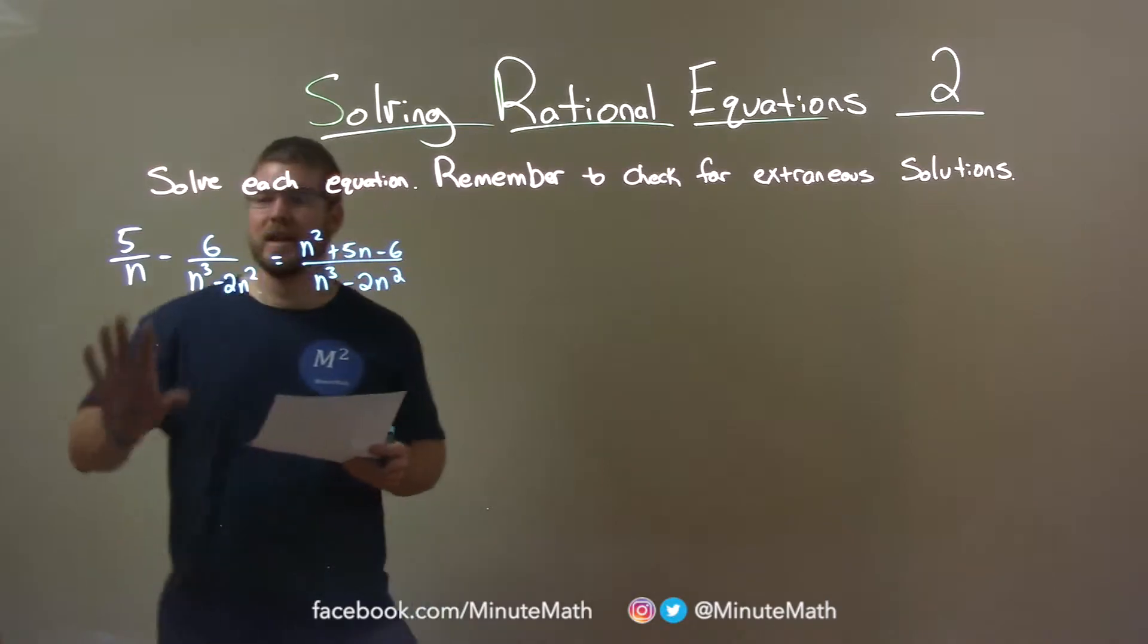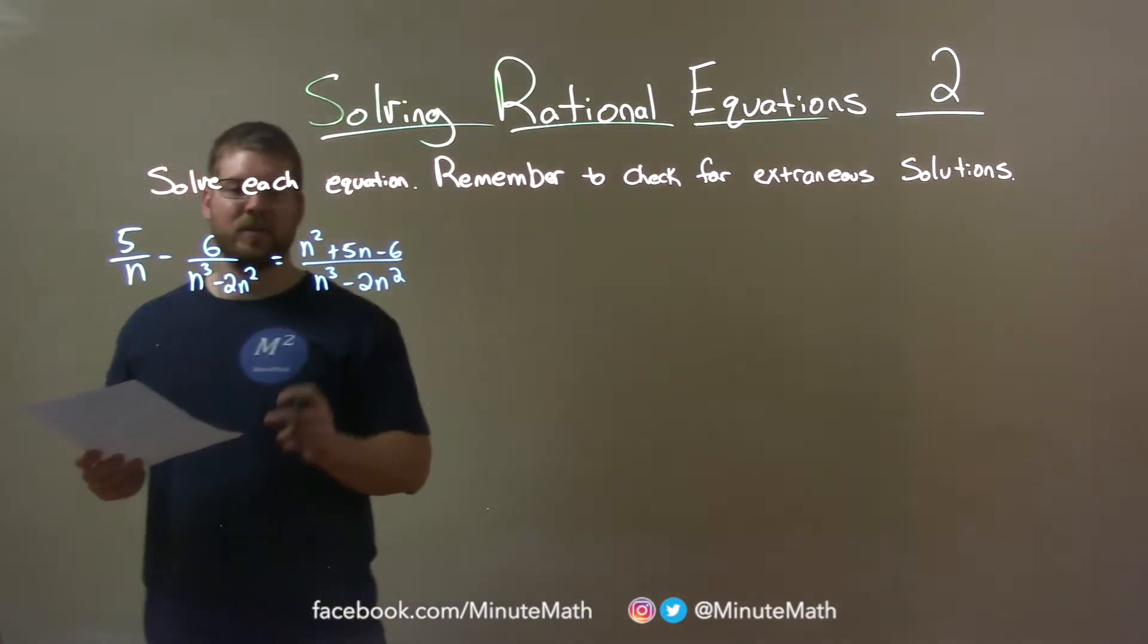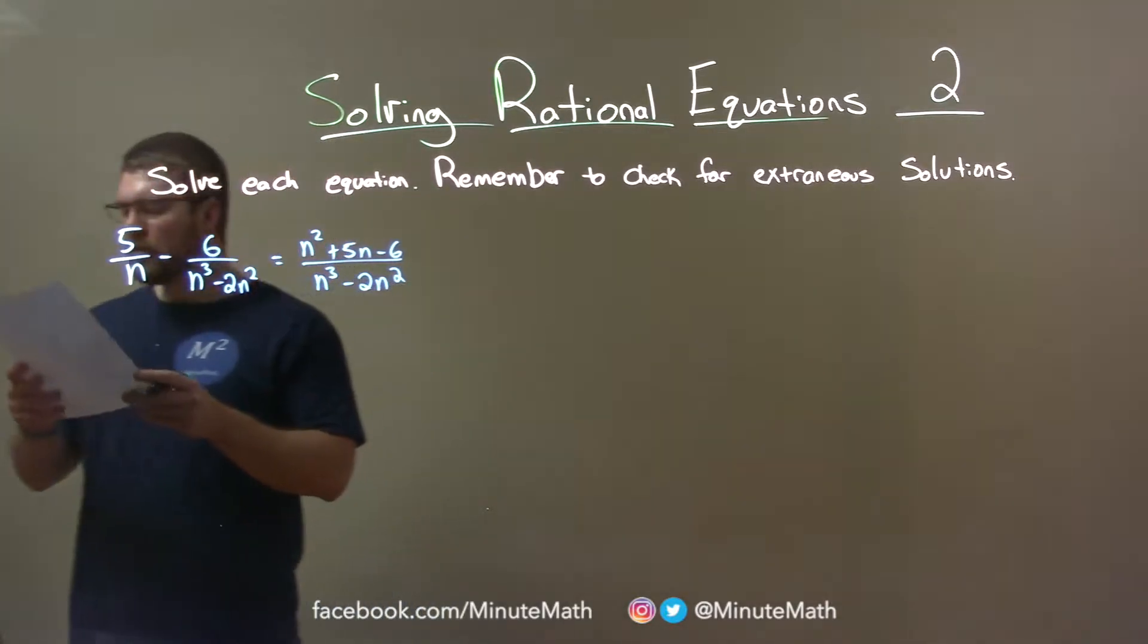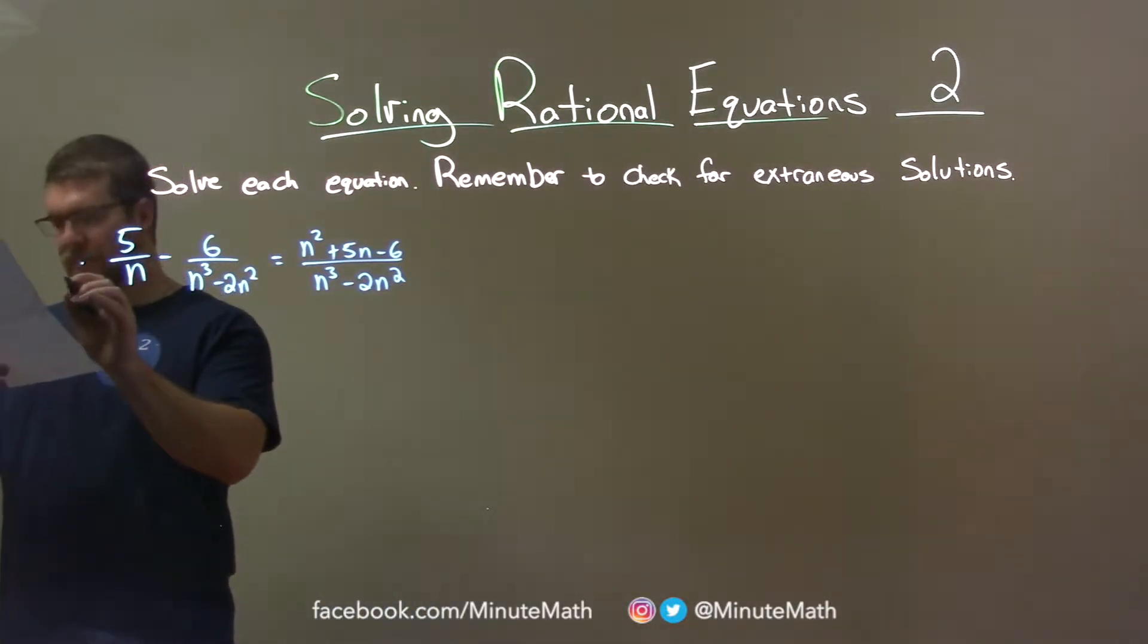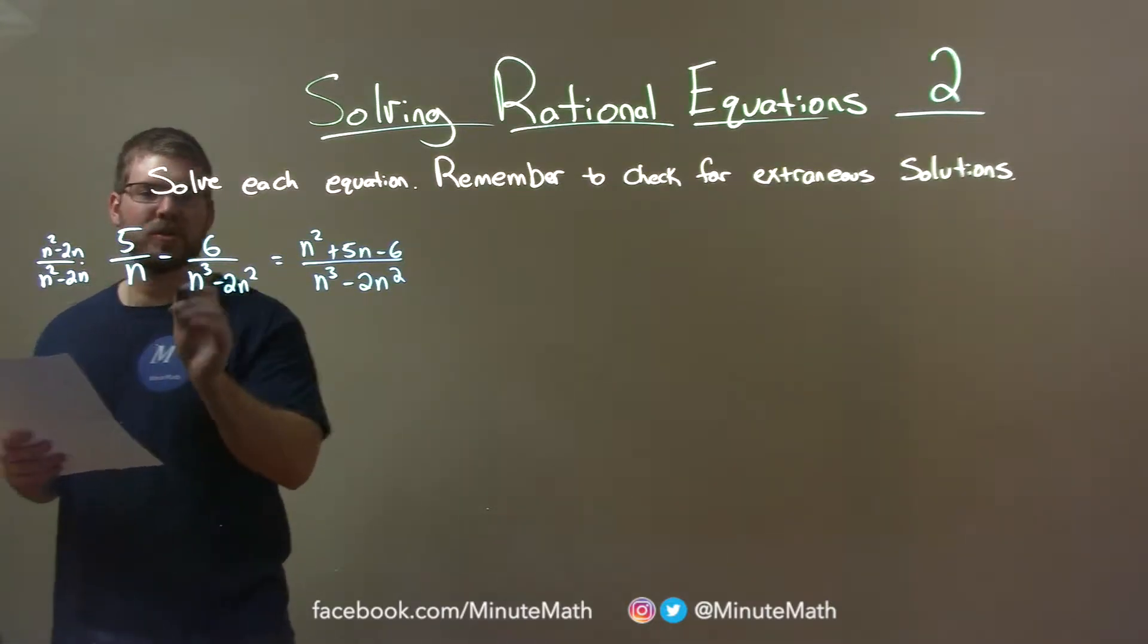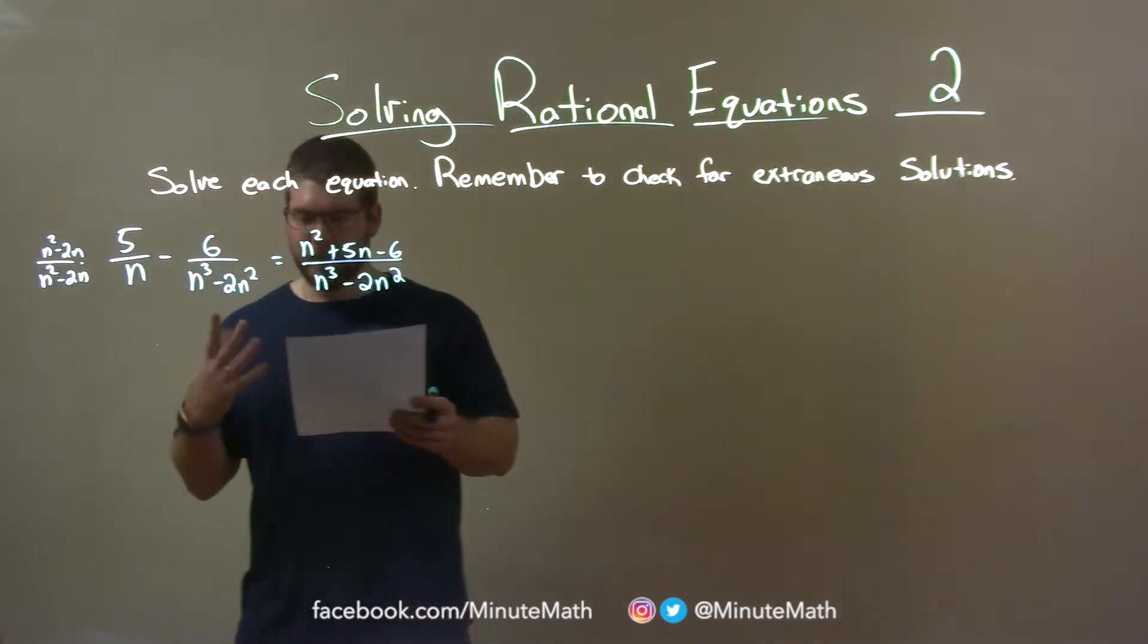What I want to do is get all of them to have the same denominator. The only thing that's not n to the third minus 2n squared is just n. So if I multiply this by n squared minus 2n over itself, multiplying that out, we should get n to the third minus 2n squared.